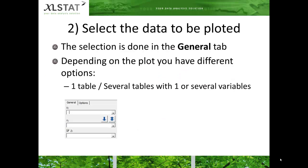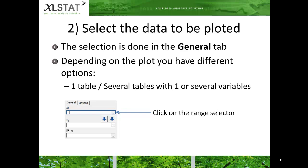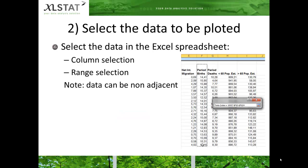Once the dialog box is open, you must select the data you wish to plot. The selection is done on the General tab. Depending on the plot there will be different options — one or several tables containing one or several variables. To proceed to the selection, click on the range selector and use the mouse to select the data in your spreadsheet. You can select the columns directly if the data start in the first row, or you may select a range. The variables can be non-adjacent.